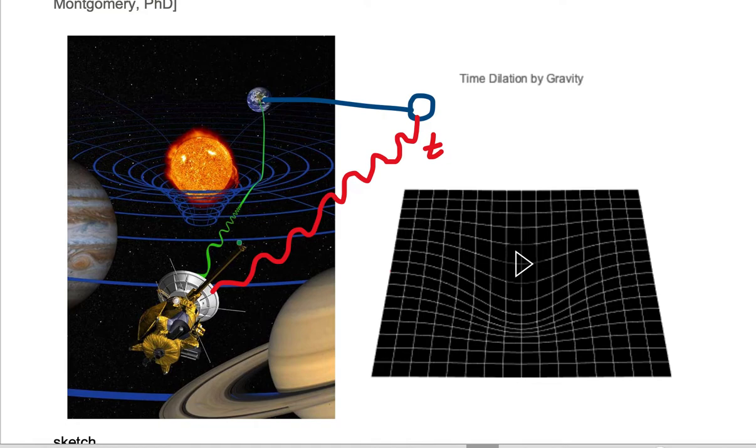In this case, it's sending out a green signal. As the signal drops into the potential well of the sun and comes out of the gravitational potential well, the signal takes longer to travel to Earth due to gravitational time dilation and therefore is received later.